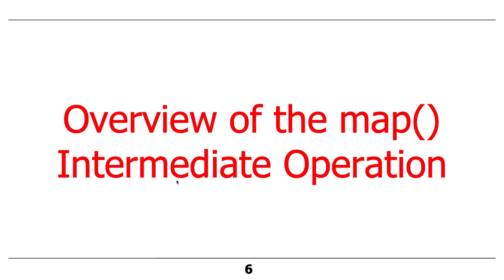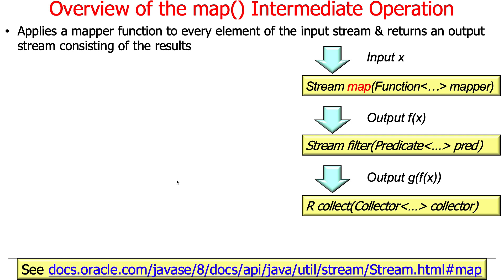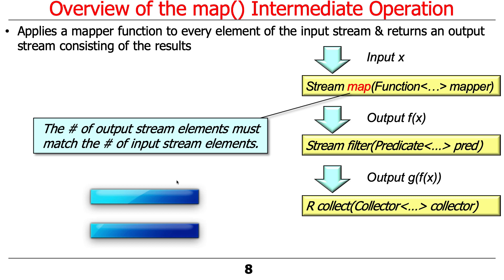Let's start by talking about the map operation — that's a very common operation. The map operation applies a mapper function to every element of the input stream and returns an output stream consisting of the results. One thing to note about map is that the number of output stream elements must match the number of input stream elements, so there's always a one-to-one correspondence between input and output with map.